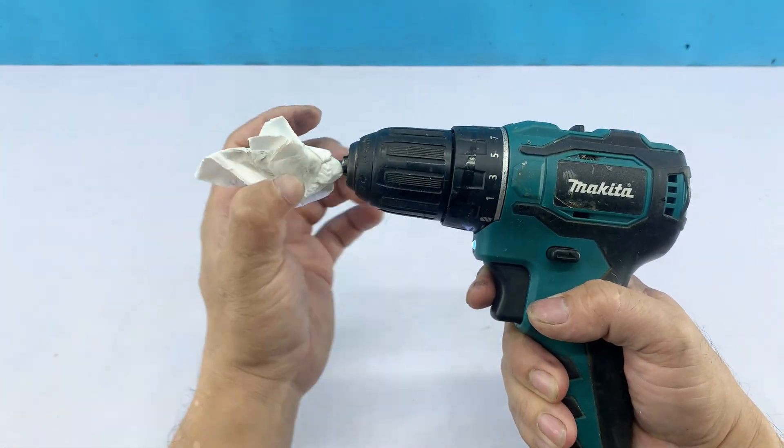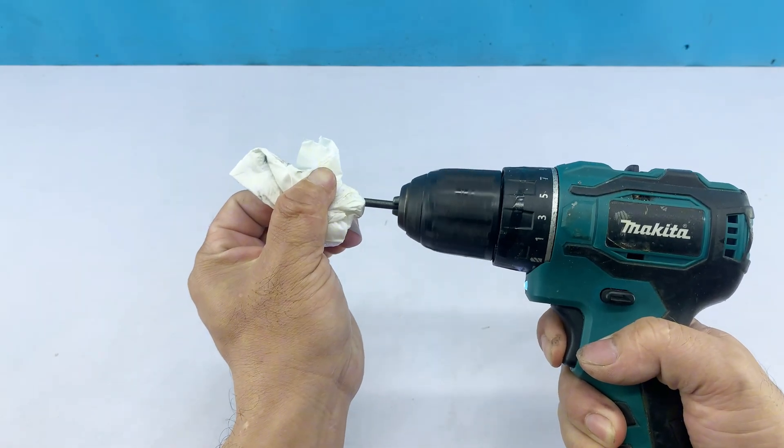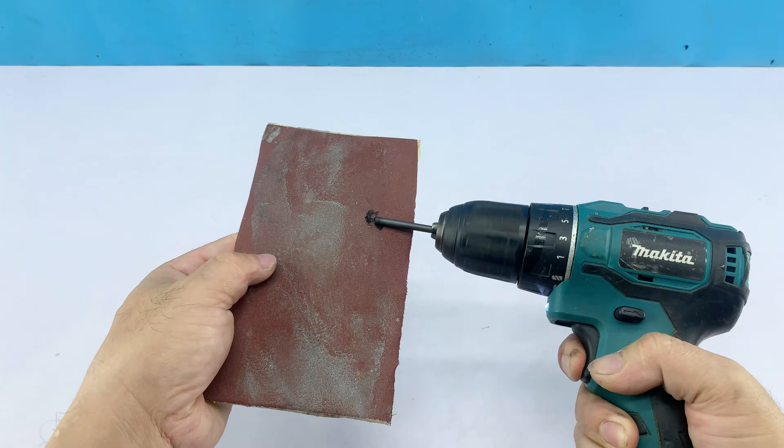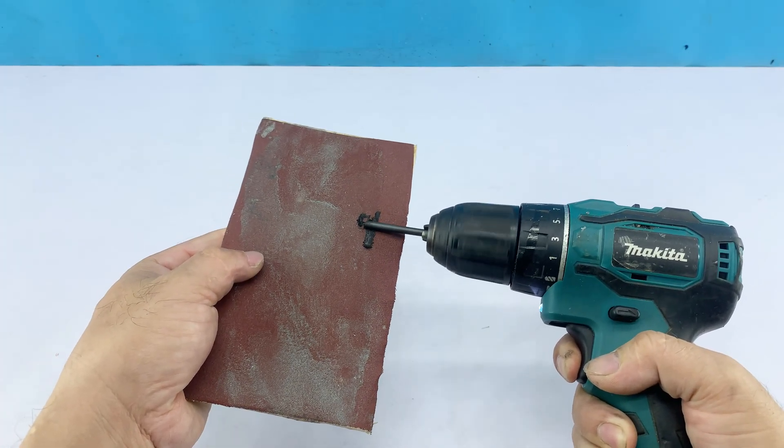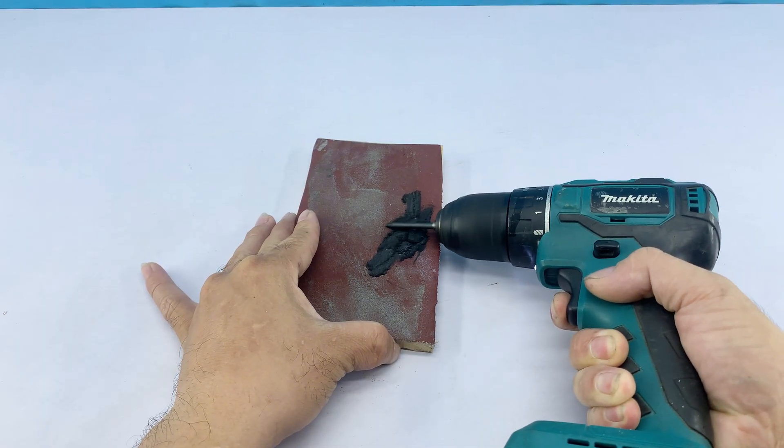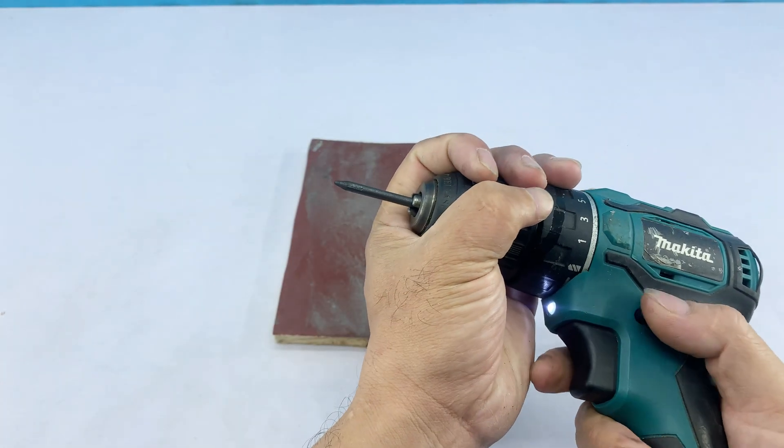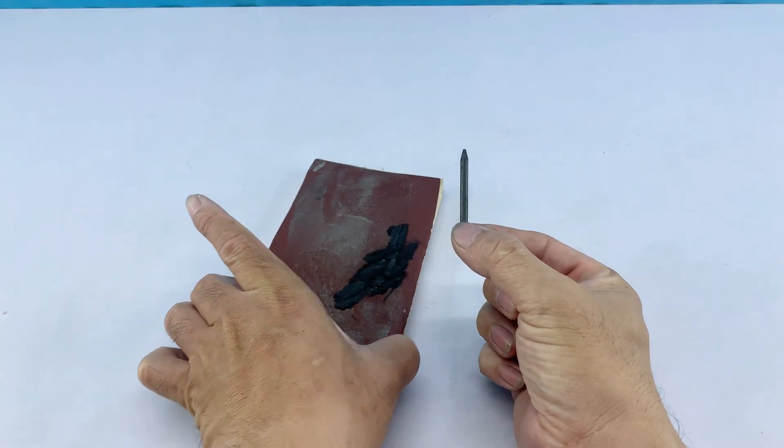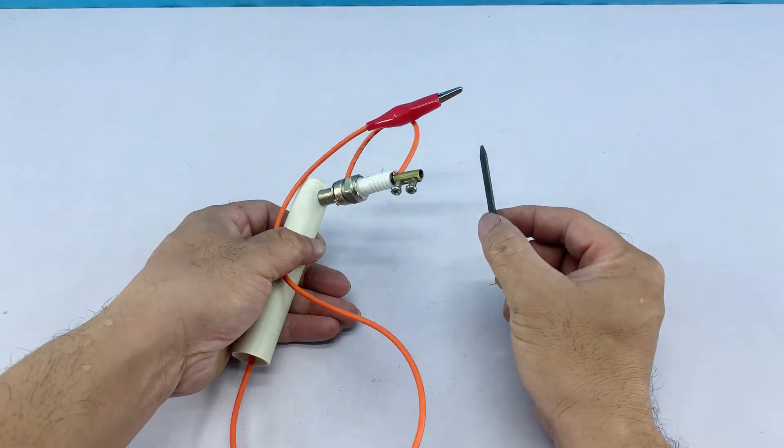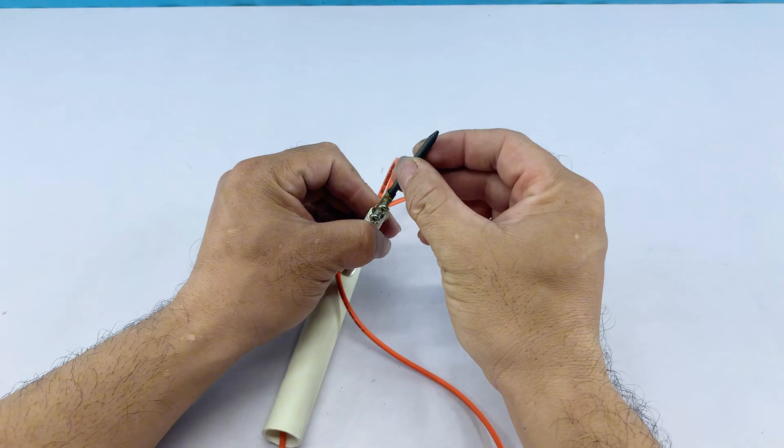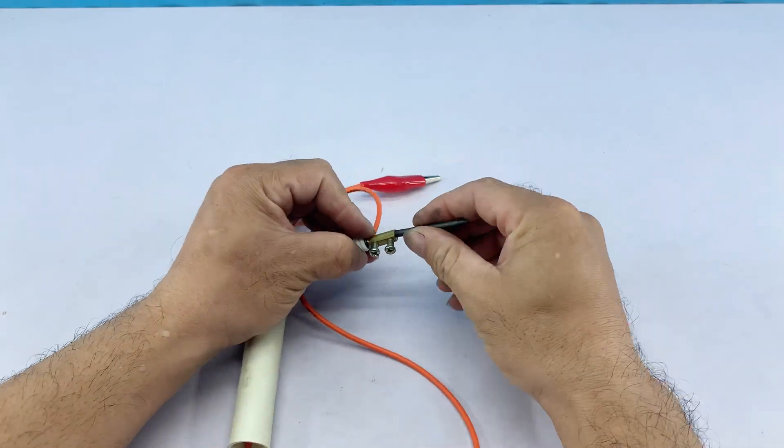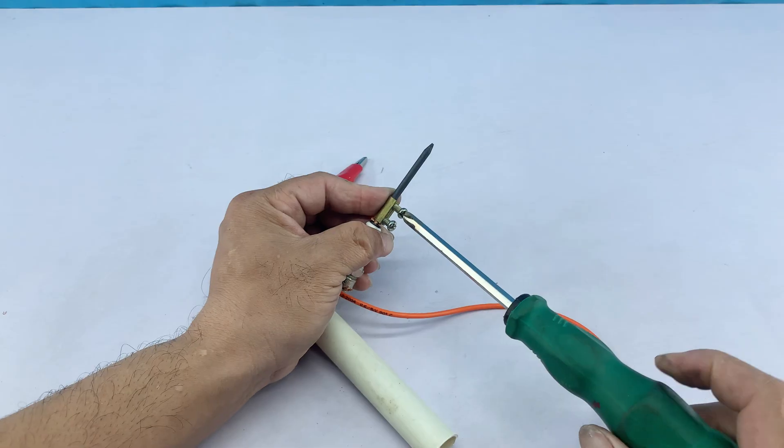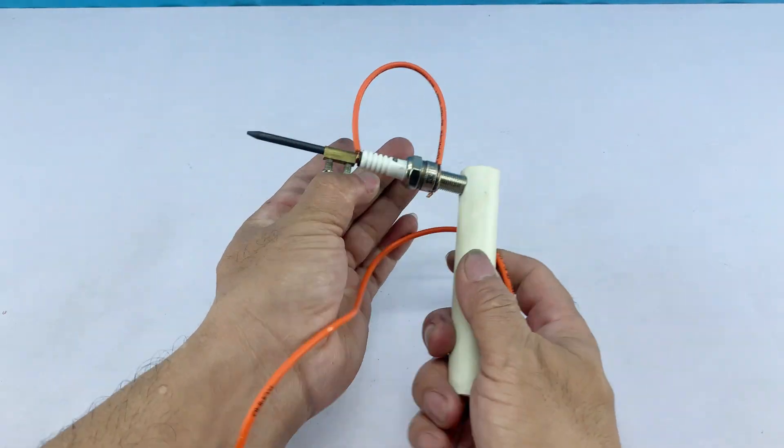To make our carbon rod tip precise and effective, I'm securing it into a drill chuck. Then, using sandpaper pressed against the spinning tip, I'm refining it. This ensures a clean and effective tip for our new tool. I'll remove the carbon rod and insert its unsharpened end securely into the spark plug connector that we previously prepared. I'll secure it tightly with the screwdriver. This is where the heat will be generated, so a firm connection is essential for safety and performance.